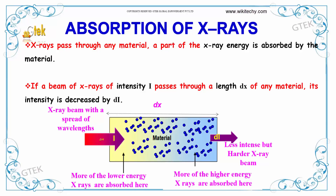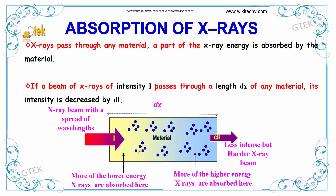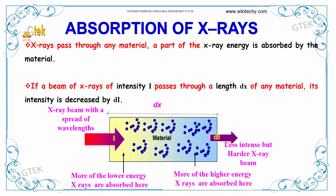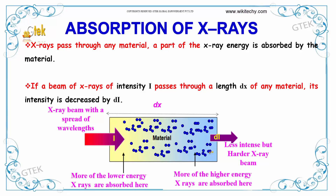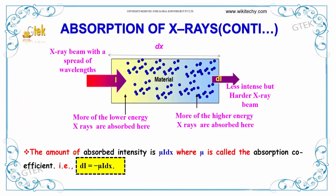More of the lower energy X-rays are absorbed, while more of the higher energy X-rays pass through. The amount of absorbed intensity is mu times i times dx, where mu is the absorption coefficient.